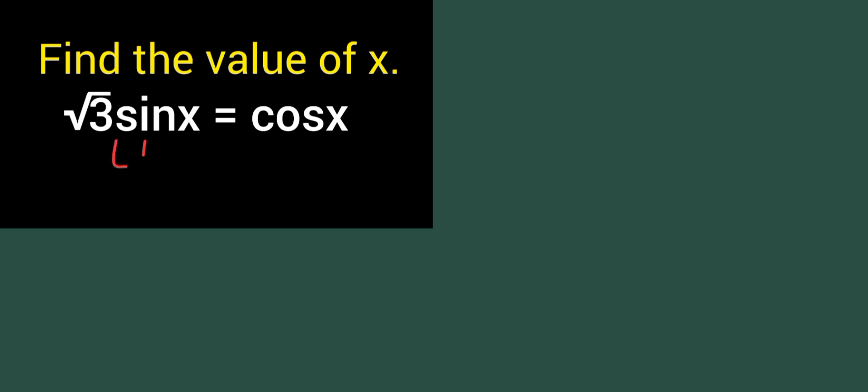First we are seeing that LHS and RHS is there. How we are solving this type of question? Variable we are keeping left side, constant term we will separate. So sin x is variable, we'll keep left side. This cos x is also variable, so I will bring it to left side.